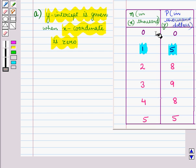Now, in this table, you can see when N is 0, P is also 0. That is, when x is equal to 0, y is also 0.